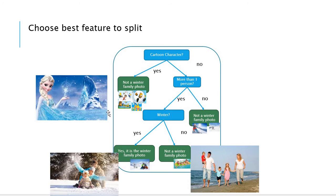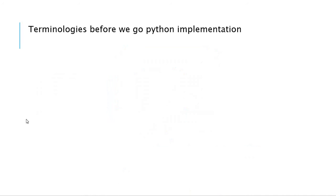Your machine can now answer with this data set whether a picture is a family winter photo. Congratulations — now you know the machine learning decision tree concepts! Before we go to the next video, let's learn a little bit about the terminologies in the decision tree.